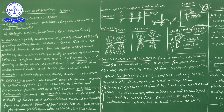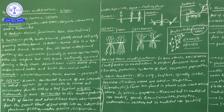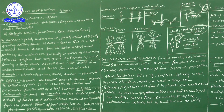Now, aerial stem modifications. In some plants, aerial stems undergo modifications to perform functions such as climbing, protection, synthesis of food, and vegetative propagation. Let us look at each type one by one.